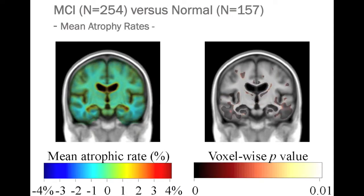Looking at mild cognitive impairment, a condition intermediate between healthy aging and Alzheimer's disease, you can also average the rate of tissue loss for different parts of the brain. In a group of 254 people with MCI, compared with rates of loss in healthy elderly people, they have sped-up rates of tissue loss by about 1 percent per year — not as fast as in Alzheimer's disease, but significantly faster than healthy elderly people of the same age and gender. The major differences in their rate of aging are in the temporal lobes, the area involved in learning and memory, which fits with the symptoms of the disease.